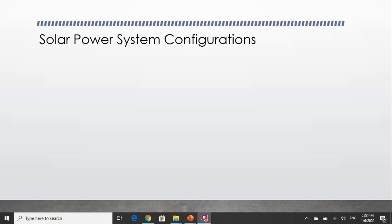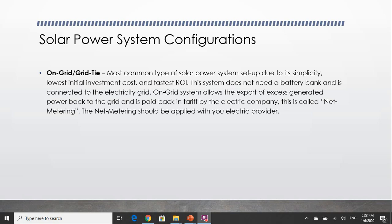We have 3 main ways to set up our solar power system. The first type of setup is the on-grid system. It is the most common type of setup due to its simplicity. It is also the cheapest to set up and it has the fastest ROI, or return on investment.